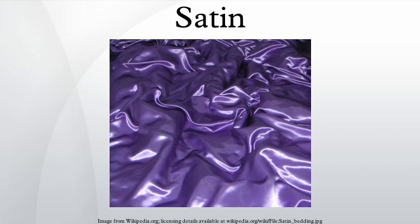Originally, during the Middle Ages, satin was made of silk. Consequently it was very expensive, used only by the upper classes. Satin became famous in Europe during the 12th century. The name derives its origin from the Chinese port city of Khansha, whose name in Arabic was Zayton.